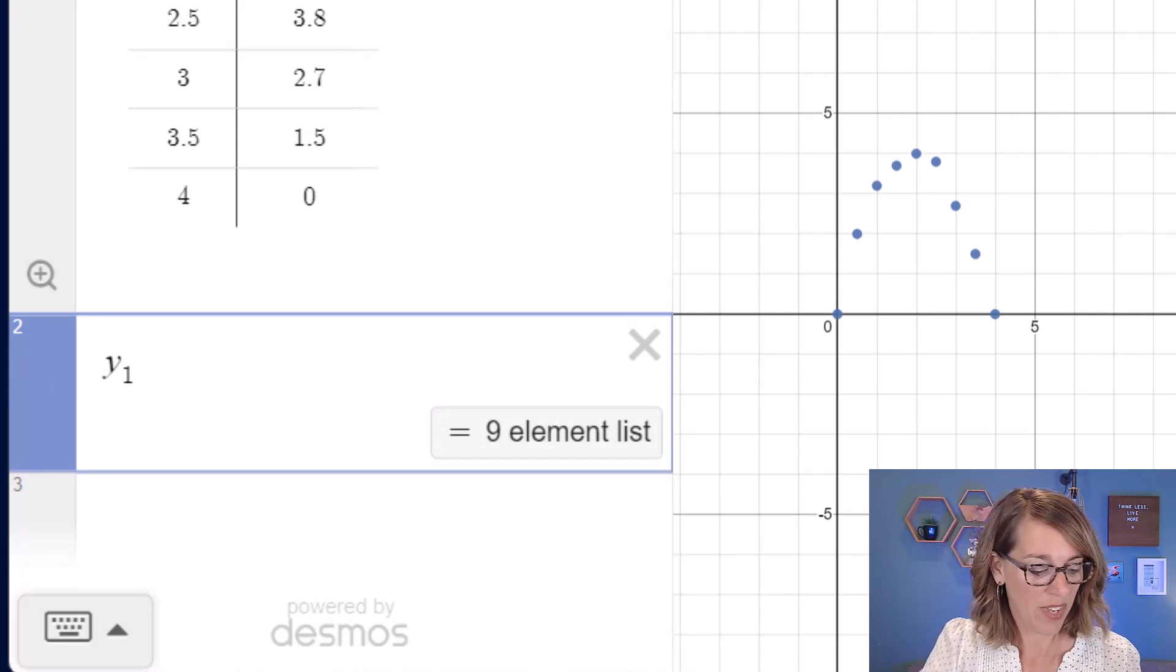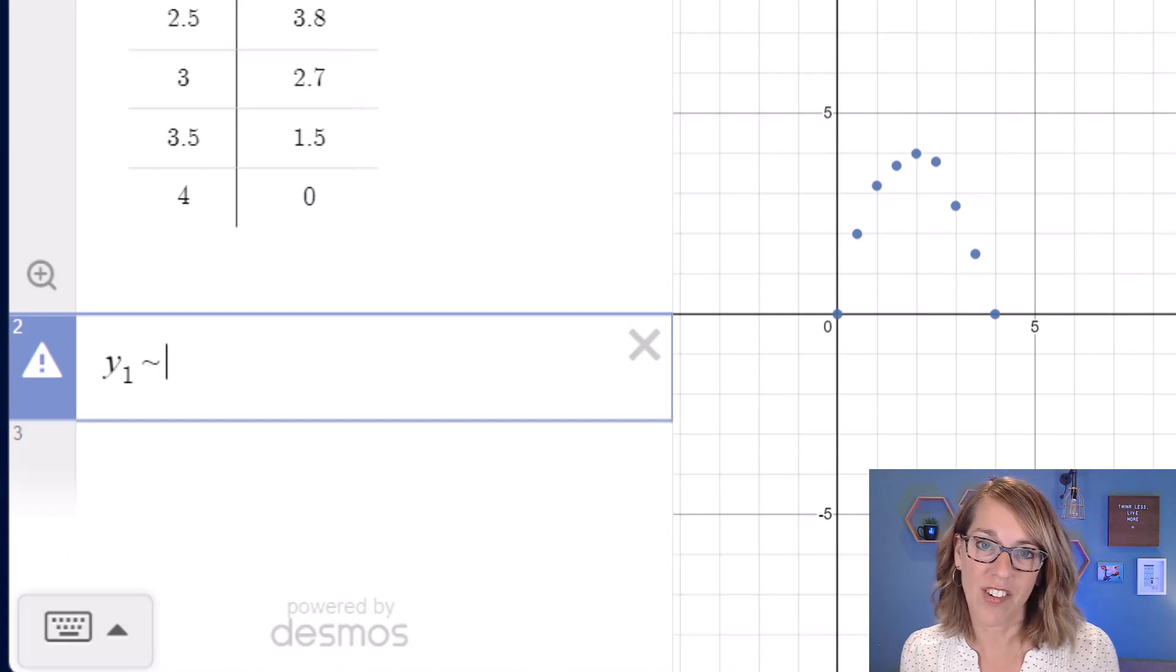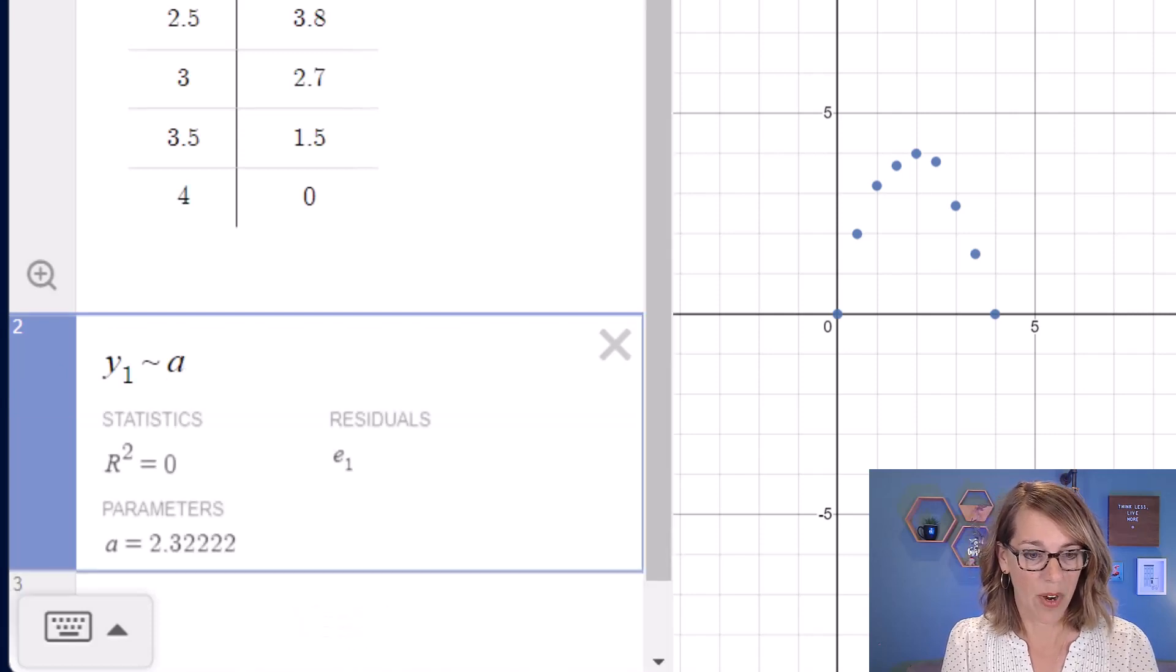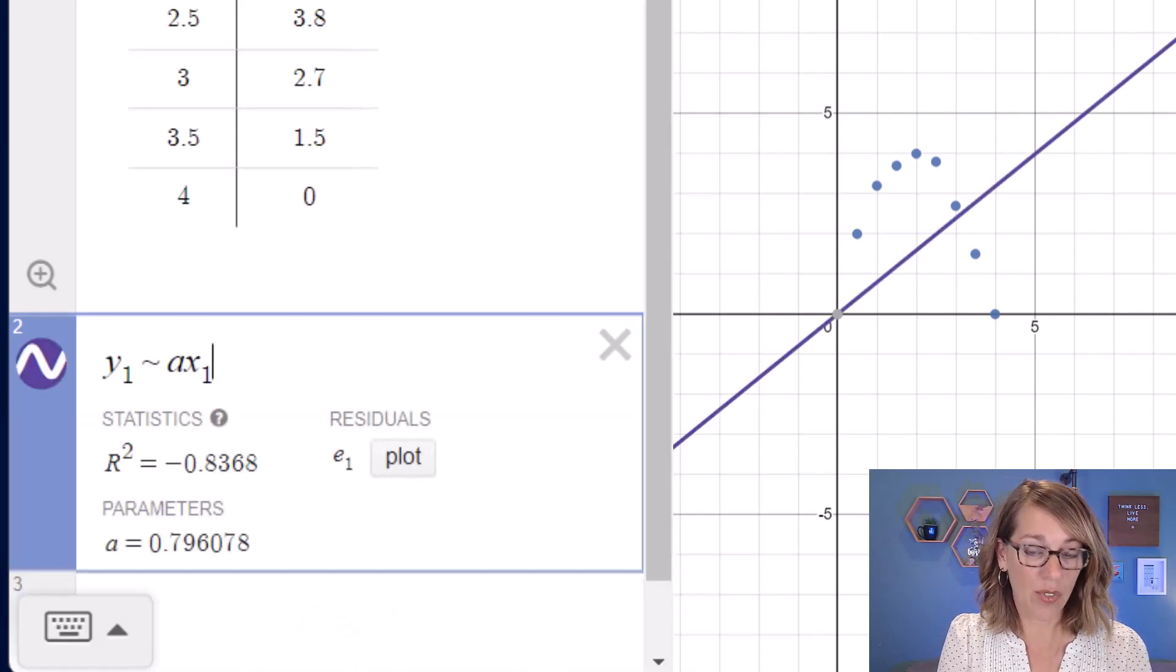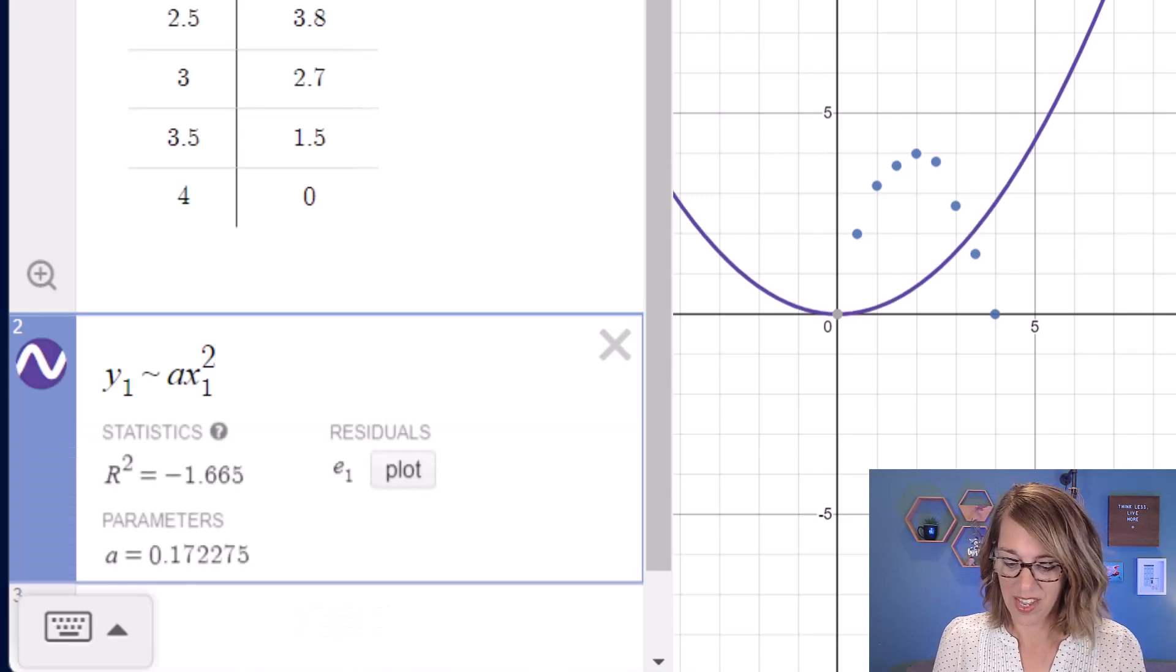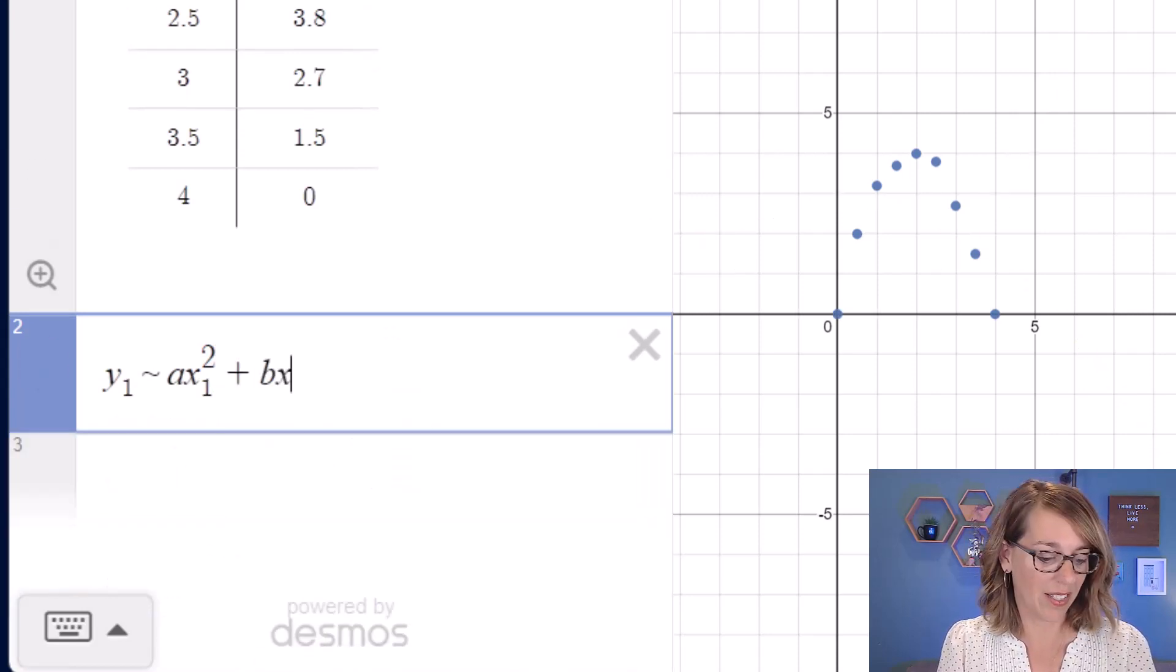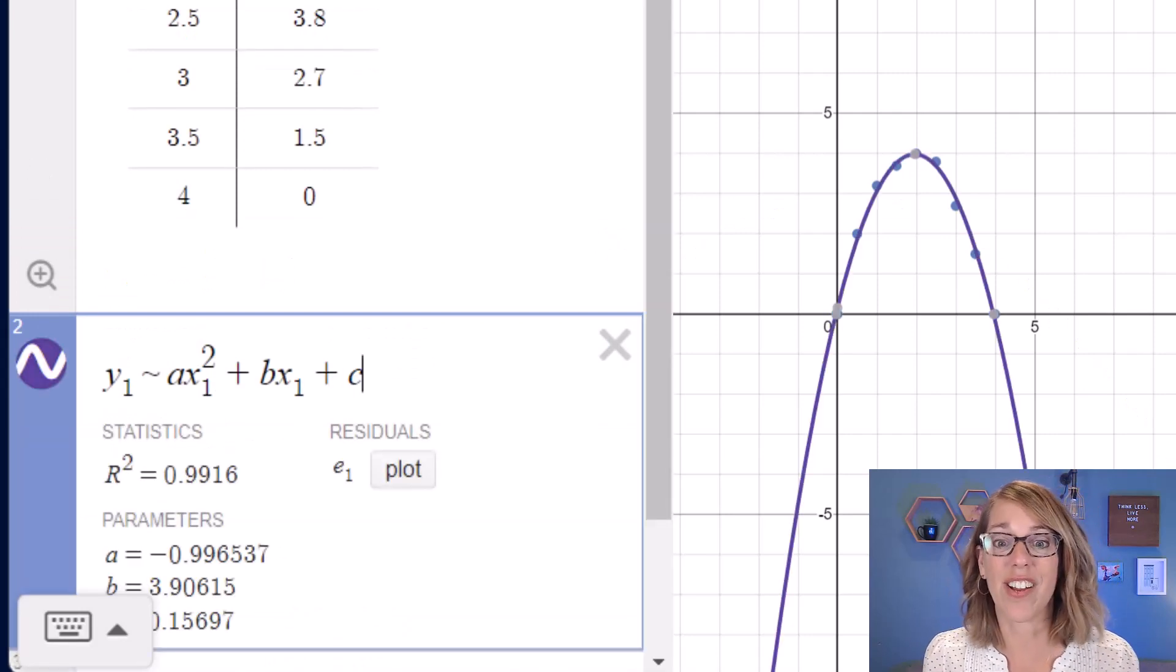And then my tilde, which is right next to the number 1. And then I want to type in a generic quadratic. You can also put this in vertex form. I'm going to do it in this form. So I'm going to do ax. Again, I need to use the variable from my table. So ax1 squared. I'm going to use the caret key, which is above the 6. And then arrow over, so I'm on the right line. And then plus bx1 and then plus c to give us a generic quadratic.